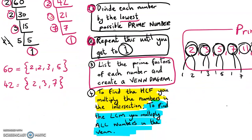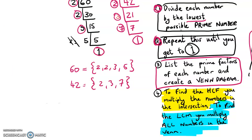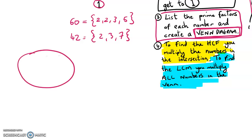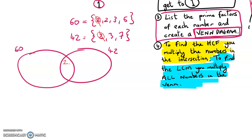Step 3 also involves drawing a Venn diagram to represent this information. On the left I'm going to have the set for 60, and over here I'm going to have 42. I look at the elements I have in each one. I have a 2 here and a 2 here — so that's in common, and it goes in the middle. I have a 3 here and a 3 here — they're in common, so anything in common goes in the middle. What's left? There's a 2 and a 5 left in the 60, so I put those in. And there's a 7 left in the 42, so I put that in.